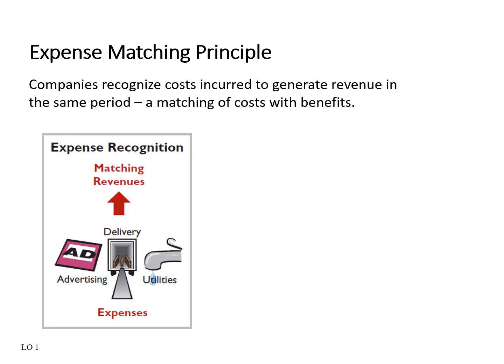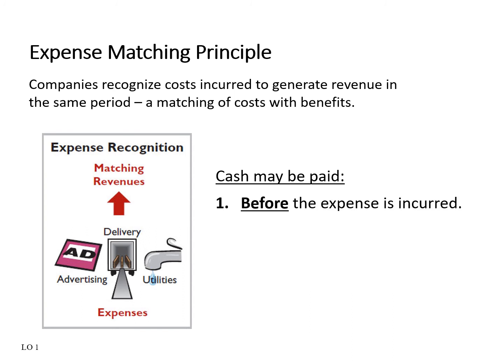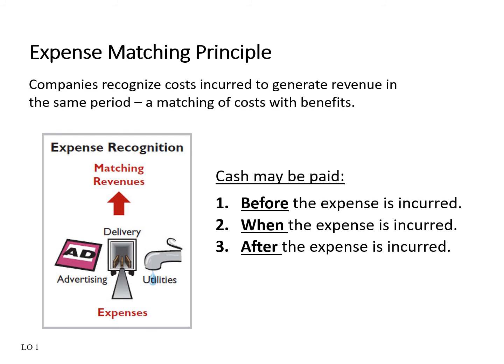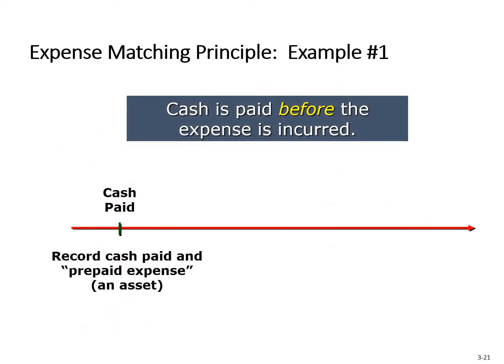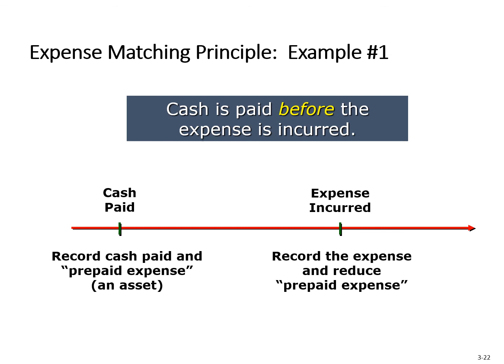On the expense side, we are going to record expenses in the same period as they helped generate the revenue, regardless of when cash happens to be paid. With the expense matching principle, cash can be paid beforehand, on the same day the effort has been incurred, or afterwards. We are going to recognize the expense when those goods or services are used, regardless of when cash has been paid. If cash is paid before the expense is incurred, the company establishes a prepaid expense, which is an asset account. The expense will be recorded when incurred — we increase the expense account and decrease the asset account, or prepaid expense.